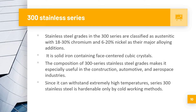The 300 stainless steel series grades are classified as austenitic with 18–30% chromium and 6–20% nickel as their major alloying additions. It is a solid iron-containing face-centered cubic crystal structure. The composition of 300 series stainless steel makes it especially useful in construction, automotive, and aerospace industries. Since it can withstand extremely high temperatures, 300 series stainless steel is hardenable only by cold working methods.